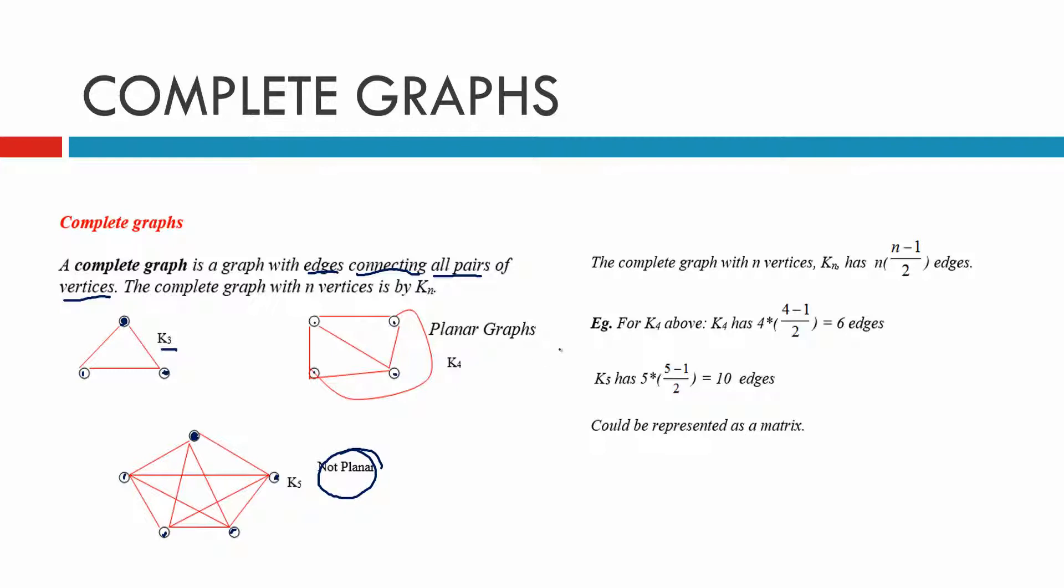Right, the complete graph with n vertices, k of n, has n times n minus 1 divided by 2 edges. Now remember, n is the number of vertices.